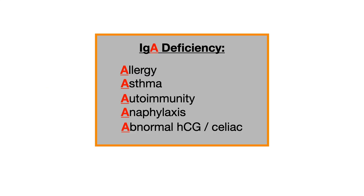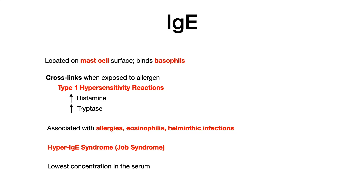Don't get IgA confused with IgE, because IgE is also associated with allergies. IgE is located on the mast cell surface and it binds basophils. When exposed to allergen, it undergoes cross-linking and you get involvement of type 1 hypersensitivity reactions, increased release of histamine, and tryptase. IgE is associated with allergies, eosinophilia, and helminthic infections — very important to know helminthic infections.